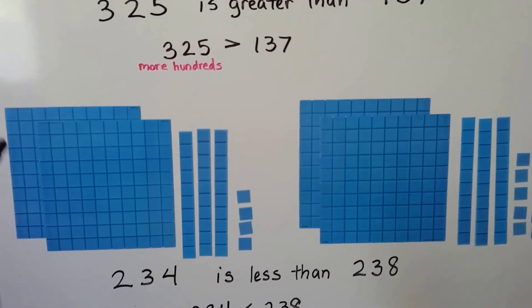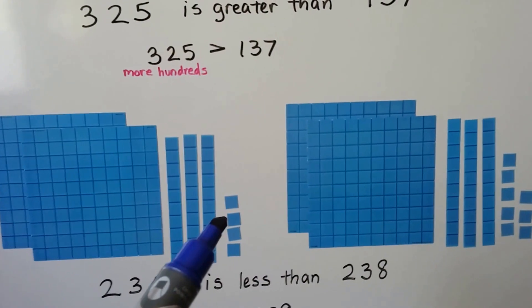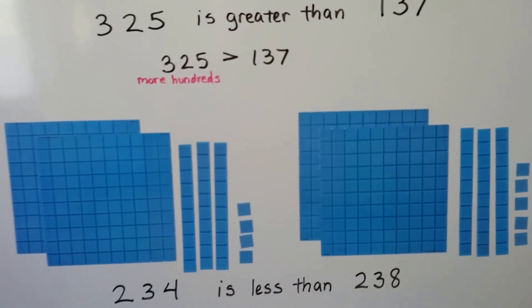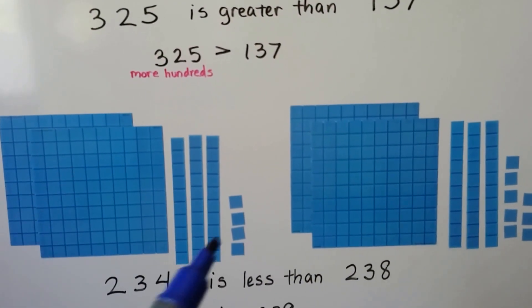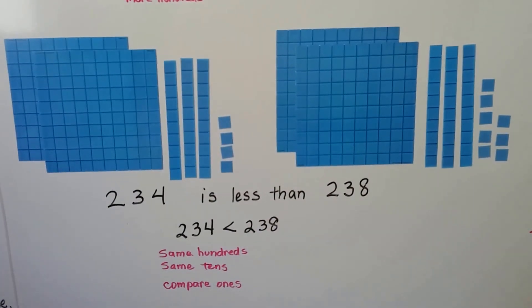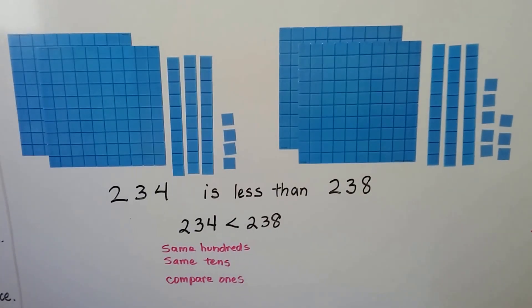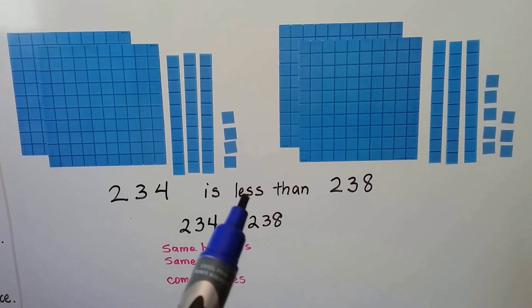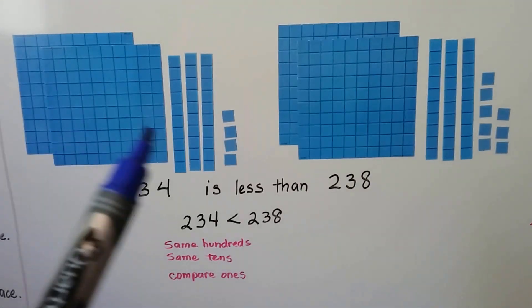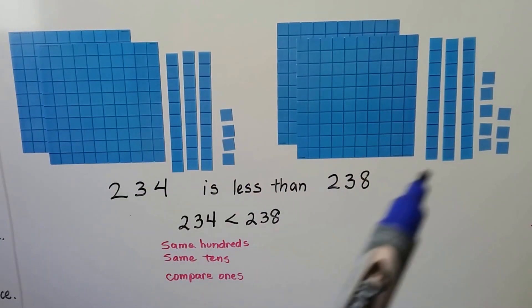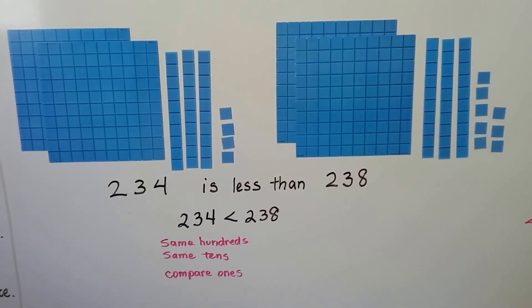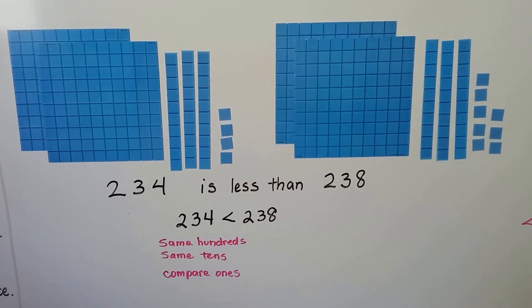Now look at this one. We have 1, 2 hundreds, 3 tens, and 4 ones. We have 2 hundreds, 3 tens, and 8 ones. If we wanted to compare them, they have the same amount of hundreds — they even have the same amount of tens. We have to go to the ones place to compare them for less than or greater than. 234 is less than 238. We write it with a less than symbol. They've got the same amount of hundreds, the same amount of tens, so we compare the ones. There's only four ones and there's eight ones, so that one's greater. So 234 is less than 238.